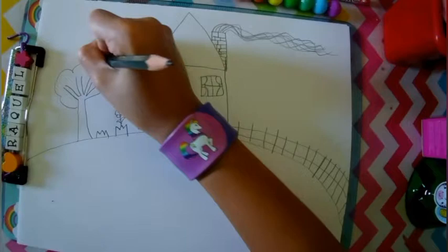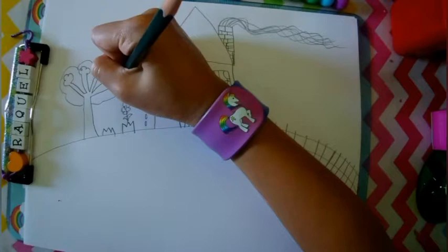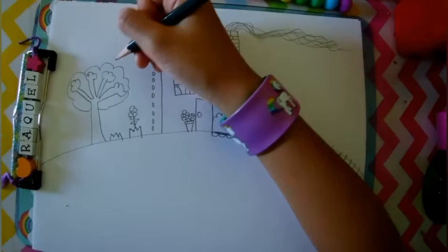Draw big puffy tree leaves. And then just draw some more. Like that. And now the tree is done.